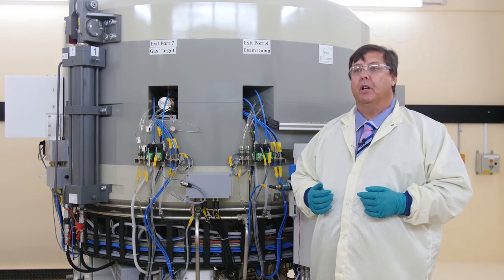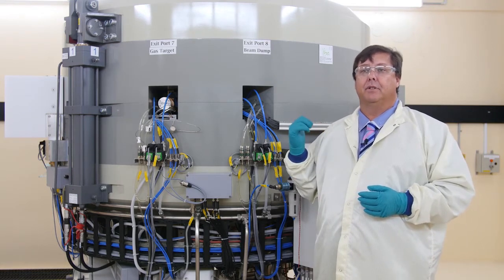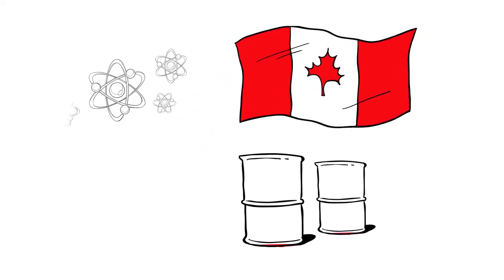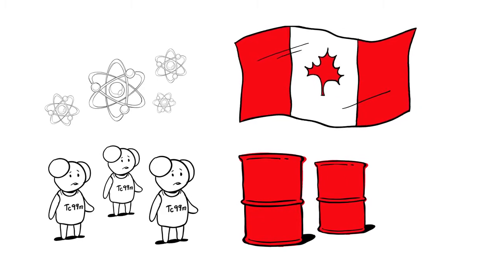It's also possible to produce technetium-99M directly in one of these large cyclotrons, if it's set up the right way. In Canada, they are trying to find a way to use cyclotrons to produce large scales of technetium-99M. This is because their nuclear reactor project had major flaws.